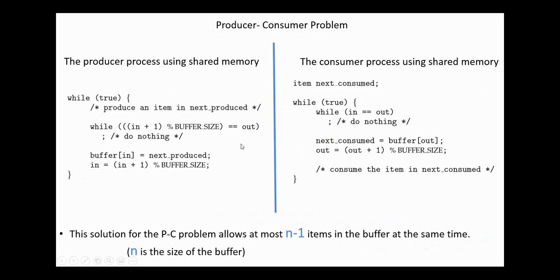Here we have the codes for the producer and consumer using shared memory. After producing an item in next produced, the producer checks if the buffer is full. If it's full, then it should wait since it cannot insert items in a full buffer. Otherwise, the next produced item is inserted in the buffer, buffer[in], and in is incremented by one mod buffer size.